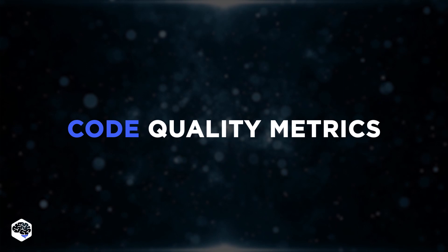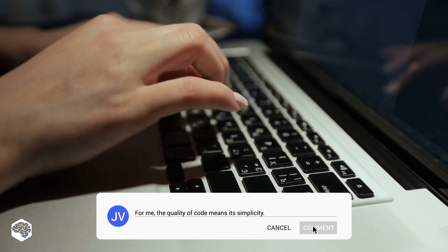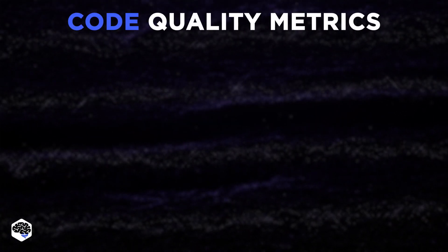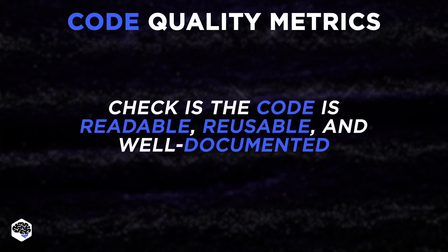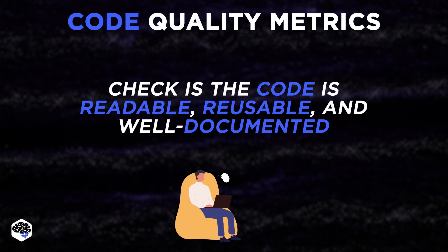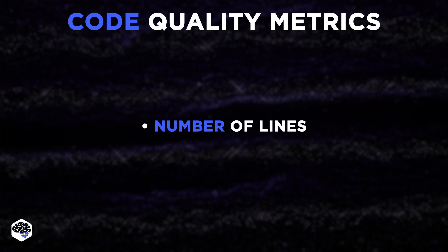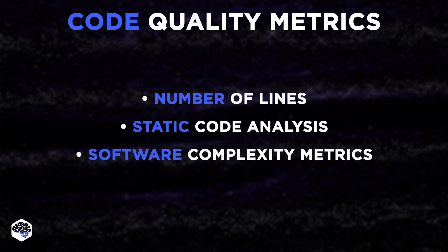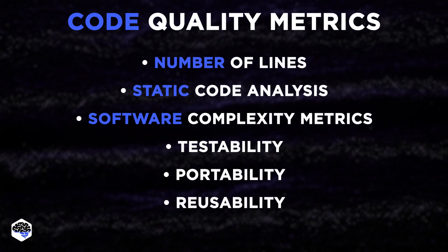The second group is code quality metrics. It is difficult to create code quality metrics, but we at Jelvix think that good code written according to coding standards is readable, reusable, and well documented. The criteria for measuring code quality include: number of lines, static code analysis, software complexity metrics — as complex code is more difficult to maintain — testability, portability, and reusability.